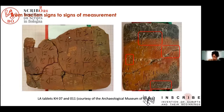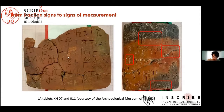For example, the ligature between logogram 303 and fraction D, which you can see there, most probably means roughly one-third of the cereal measure.